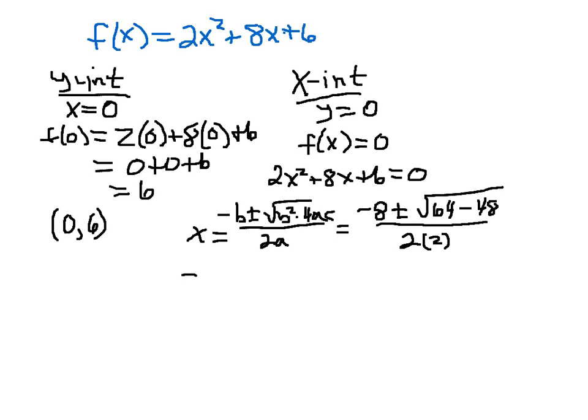So I'm going to bring that down here. It'll be minus 8, plus or minus, the square root of 64 minus 48 is 16. That's good. We get a perfect square. That means we're going to have nice answers. This will simplify to minus 8, plus or minus 4, all over 4.